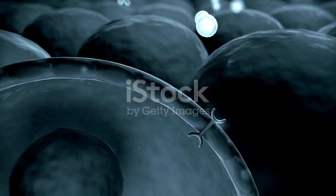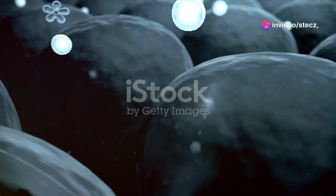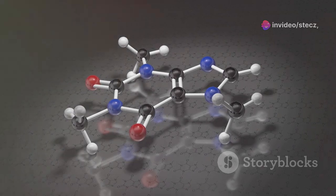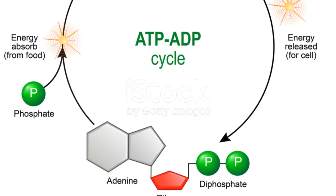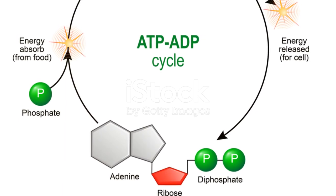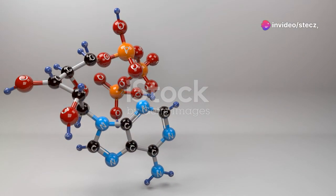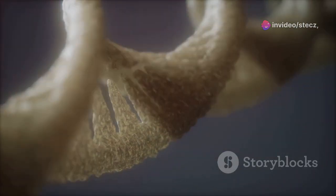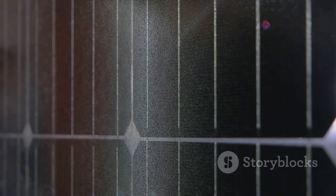The intricate dance of molecules within a cell, including the synthesis of amino acids, requires energy. This energy comes in the form of ATP or adenosine triphosphate, the universal energy currency of life. ATP is a molecule brimming with potential energy stored within the bonds that hold its three phosphate groups together. When these bonds are broken, energy is released, much like the release of energy when a coiled spring is suddenly let go. This released energy powers a wide array of cellular processes.